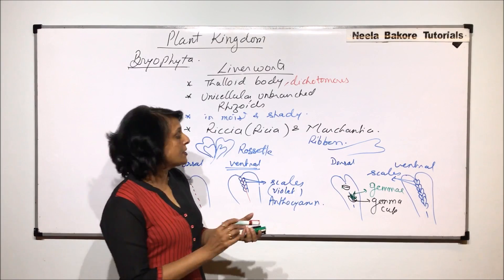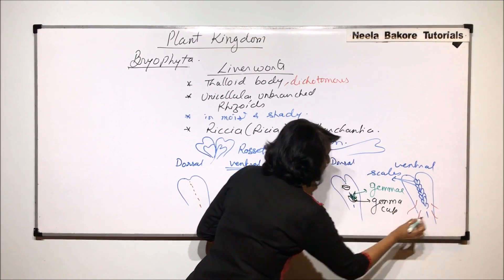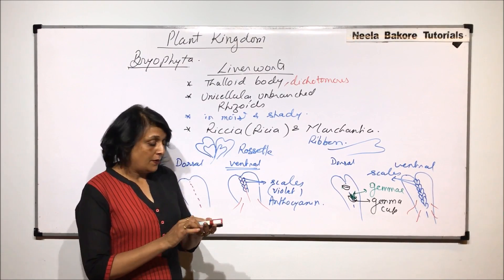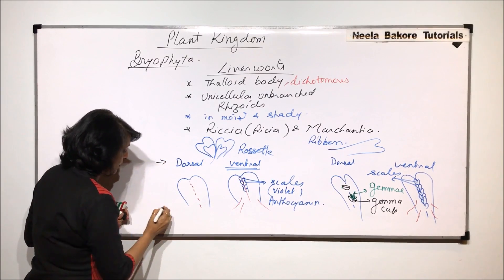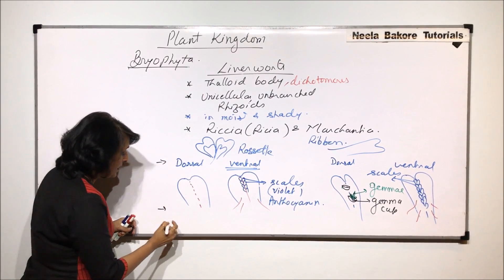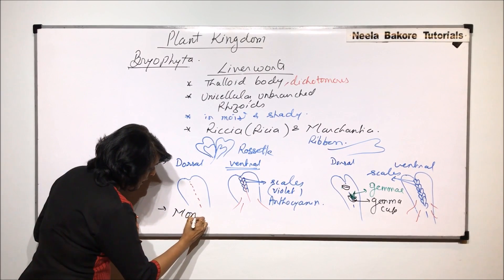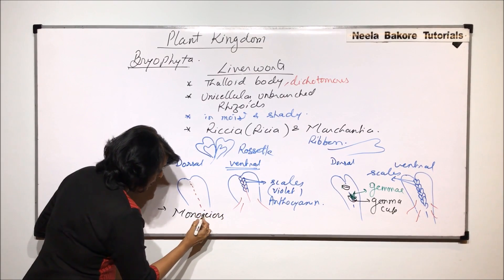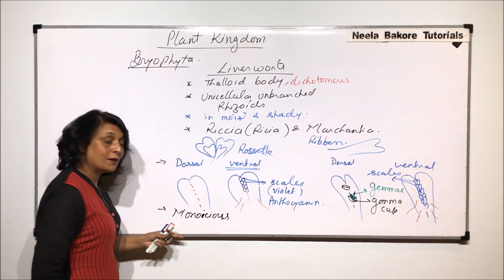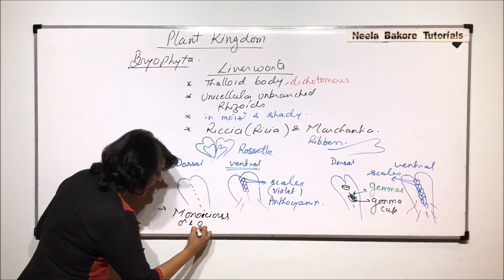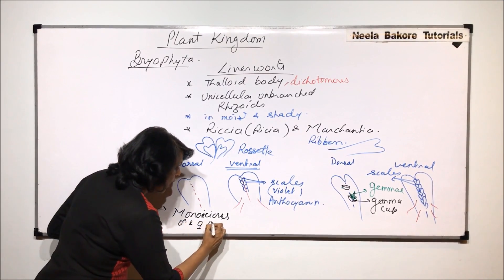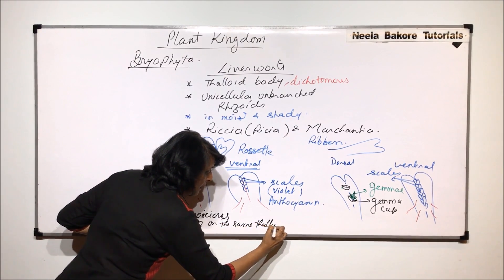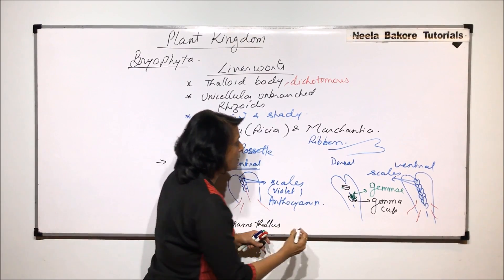Riccia is monoecious, meaning male and female sex organs are on the same thallus. Whereas Marchantia is dioecious, meaning there is a separate male thallus and a separate female thallus.